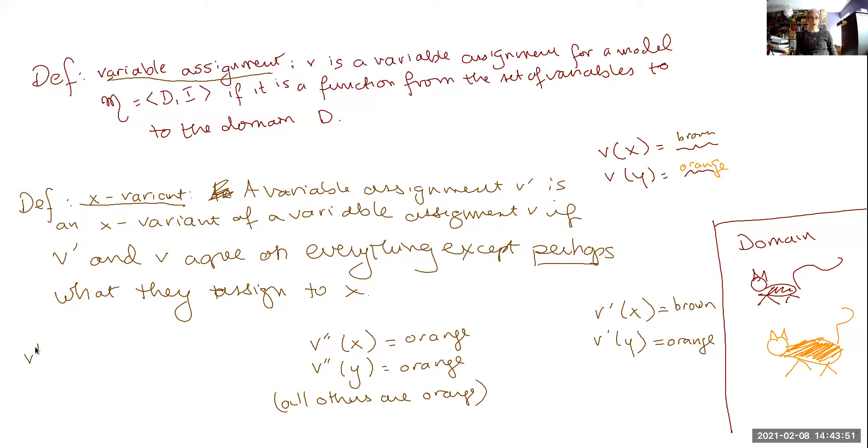One last one, let's call this one v star. V star, it assigns to x, the brown cat, and it assigns to y, the brown cat. Now,